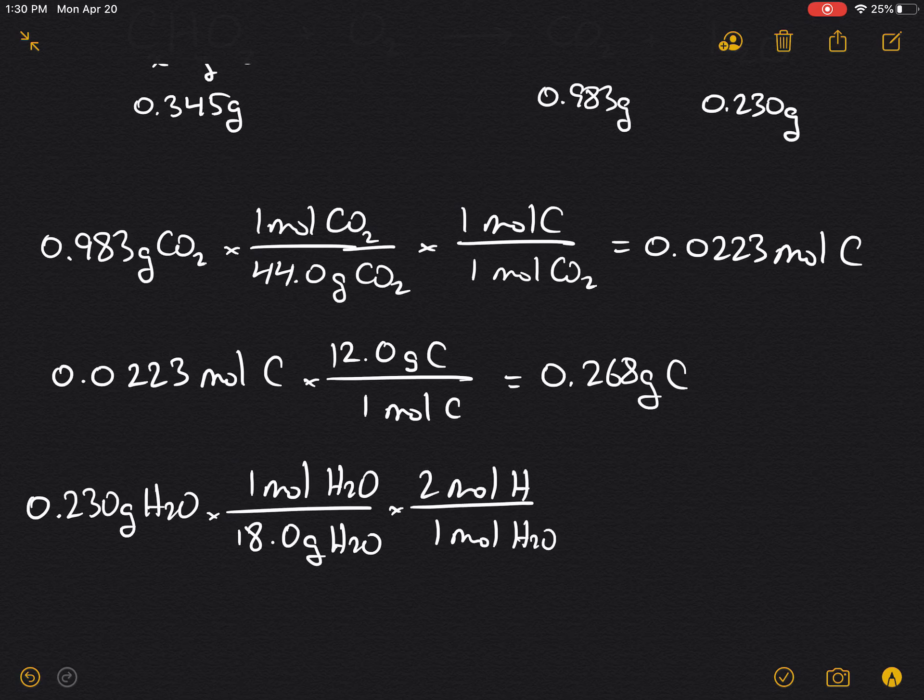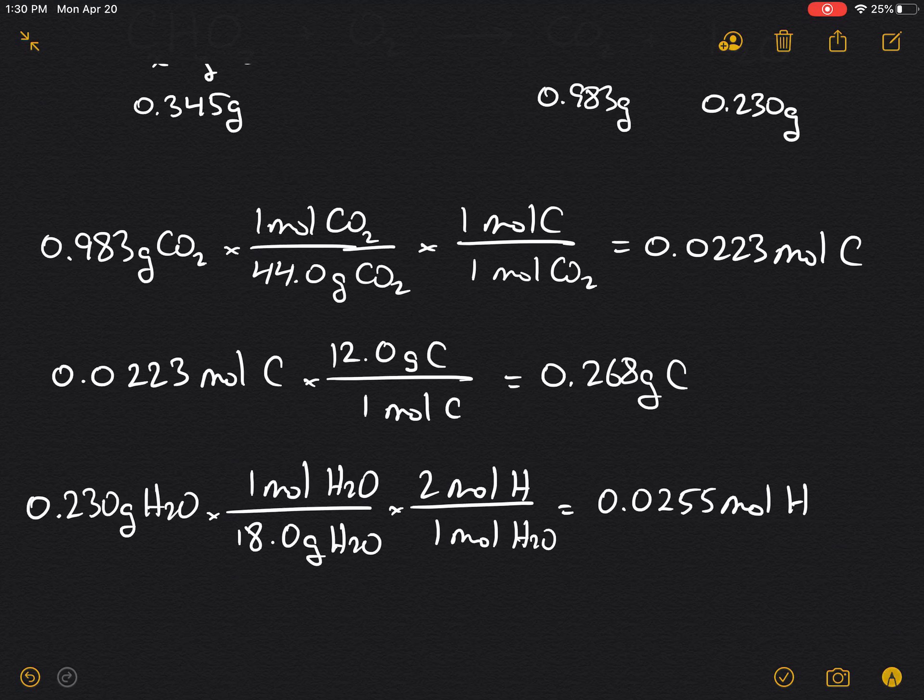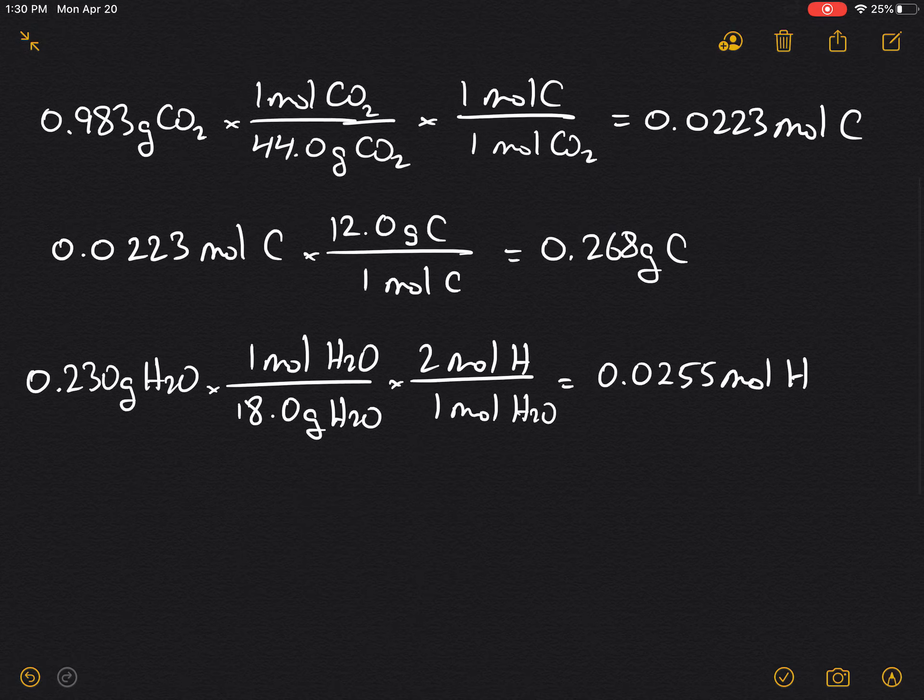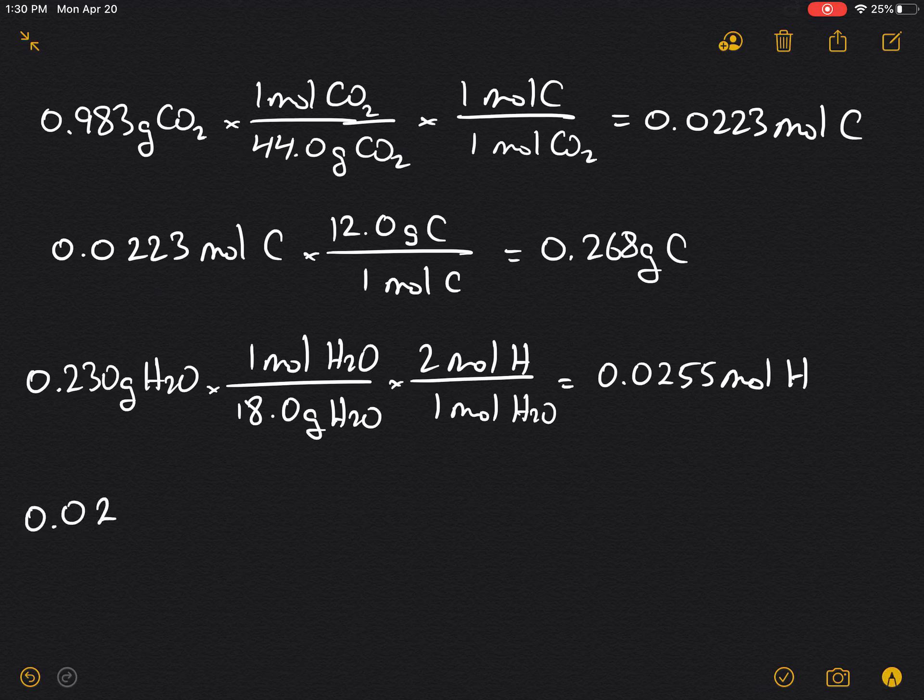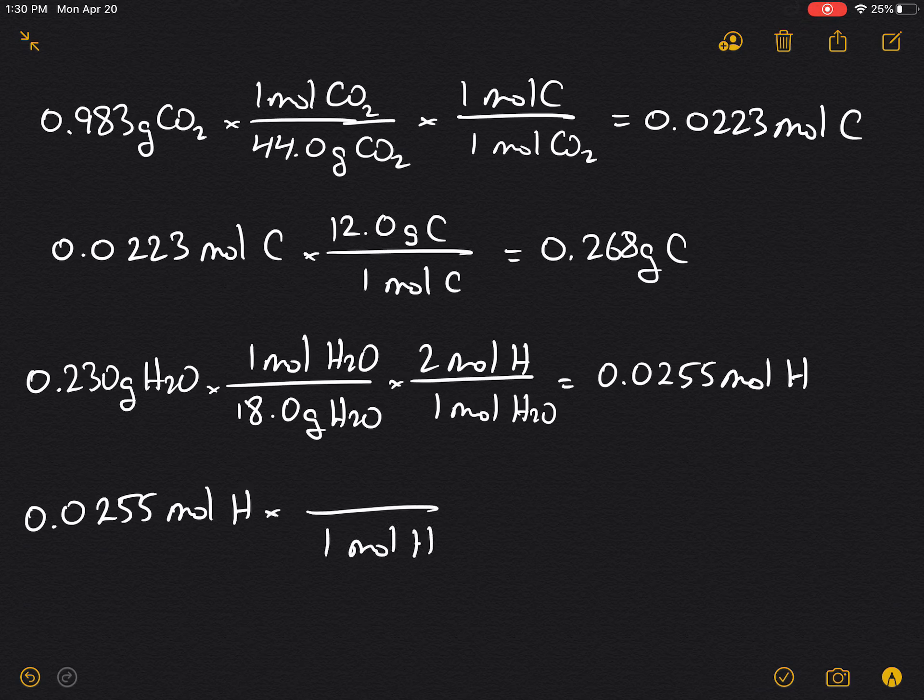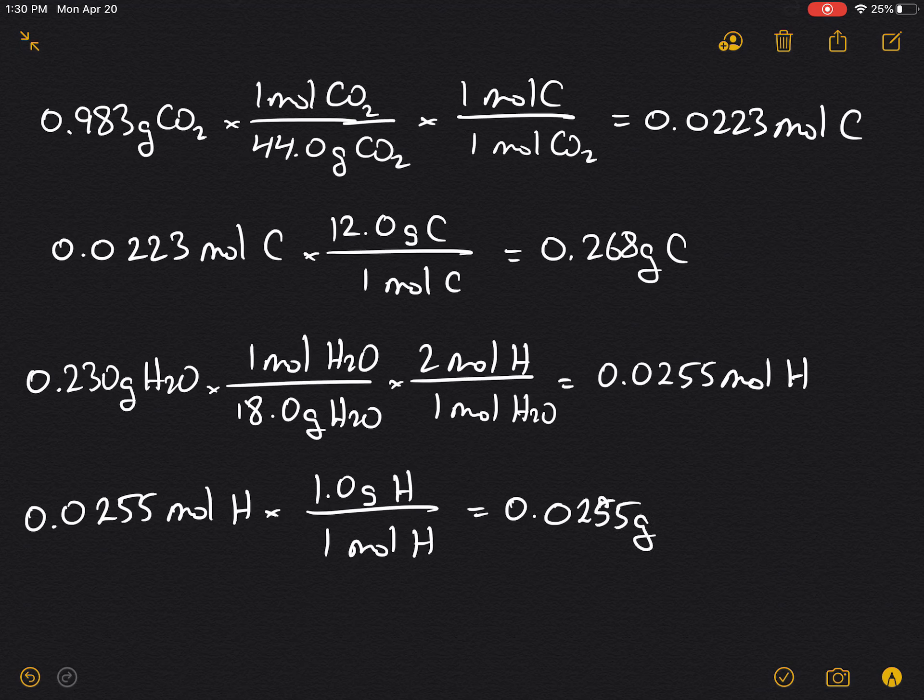And that would be equal to 0.0255 moles of hydrogen. Let's solve for the mass of hydrogen, 0.0255 moles of hydrogen times one gram per mole equals 0.0255 grams of hydrogen.